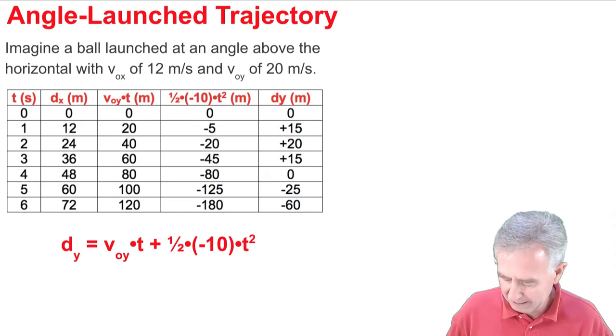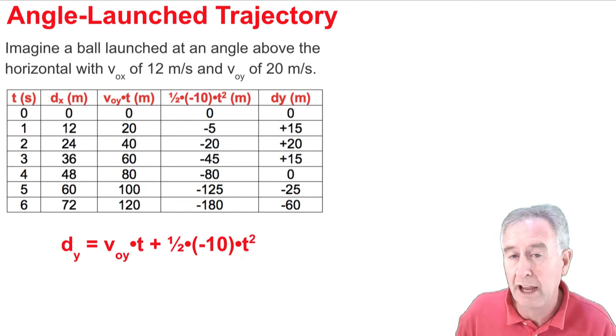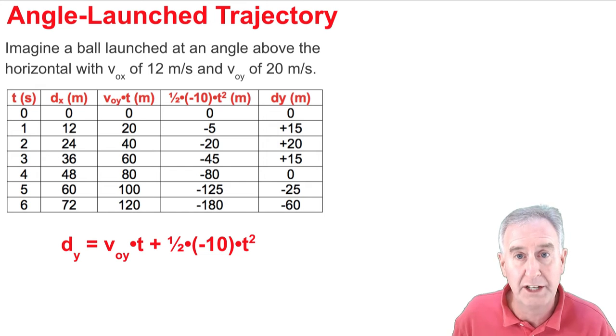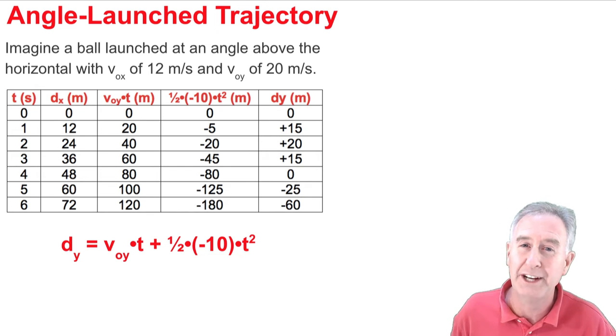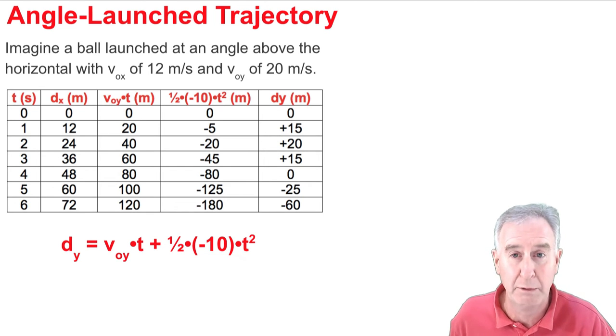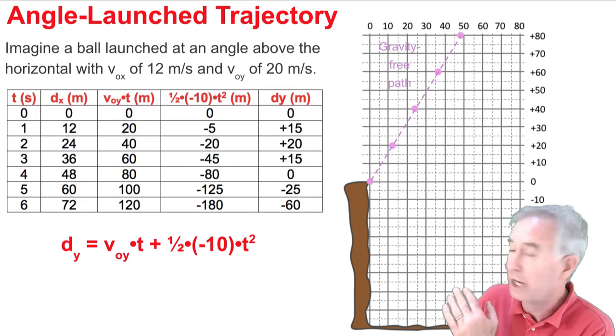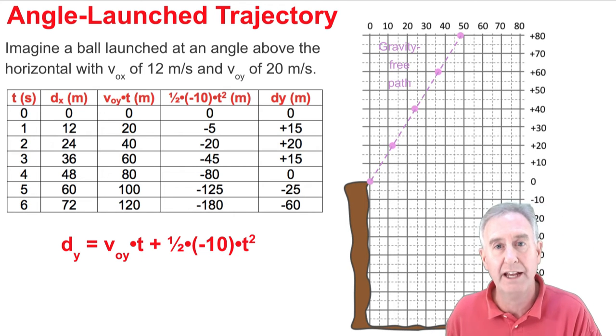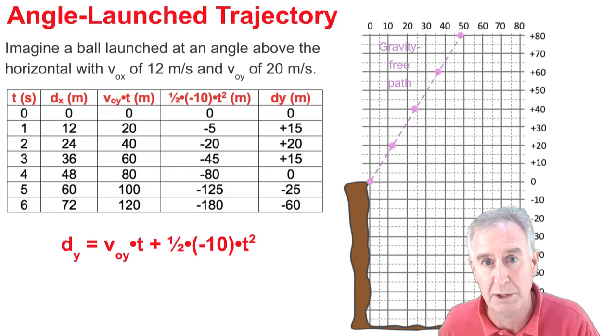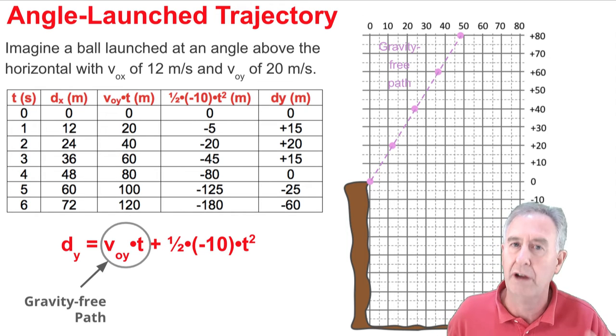So the first term, Voy times t, gives us a feel for the gravity-free path of the projectile, tells us how high the projectile would rise due to the effect of that original velocity. And on the trajectory plot, what we notice is that's the magenta straight-line path that we see there. That tells us the gravity-free path.